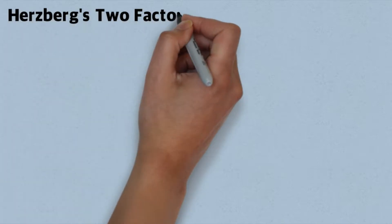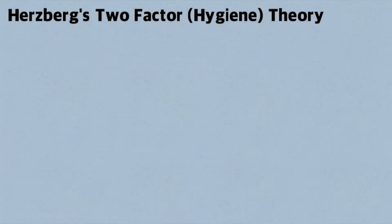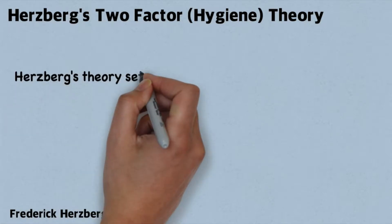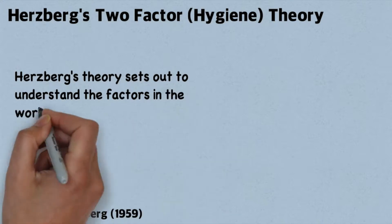What's up guys, welcome to another video. Today's video will explain Herzberg's two-factor model which is used in human motivation theory. This is also commonly known as the hygiene theory.